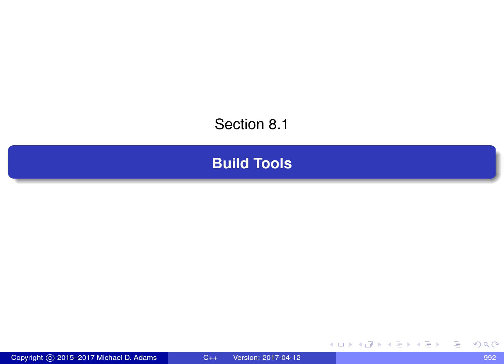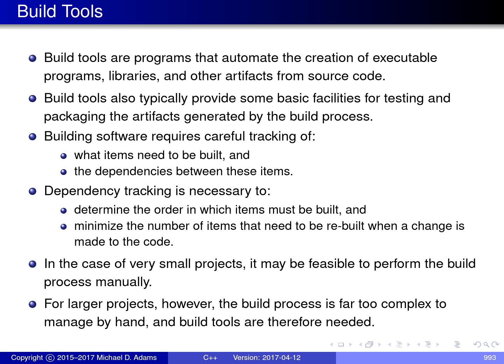In this section, I'll be discussing a class of software tools known as build tools, which includes, for example, utilities like CMake and Make. Building software is the process of creating executable programs, libraries, and other artifacts from the software source code. And the programs that build software are known as build tools.